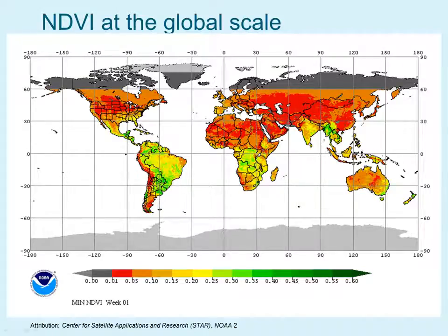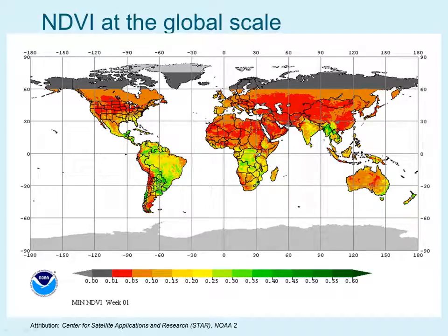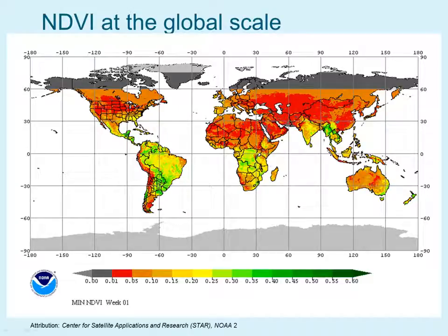This image shows the average NDVI for early January. You can see there is very little vegetation in the northern hemisphere because it's wintertime and many of the trees in the mid-latitudes have lost their leaves. While in the southern hemisphere there is more greenness. However, places in Australia appear red because those red regions are desert regions and have very little greenness.